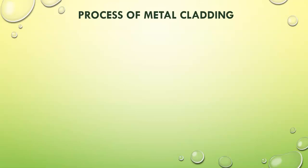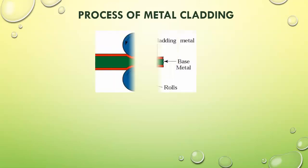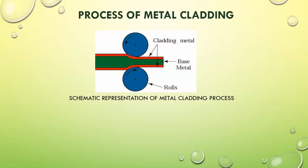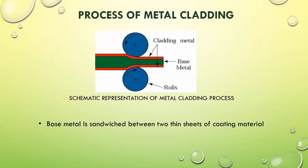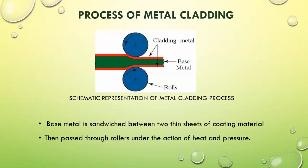Let us see the process of metal cladding. This is a schematic representation of the metal cladding process. Here, you have the base metal which is literally sandwiched between two thin sheets of coating material. It is then passed through hot rollers, and because of the action of heat and pressure, the sheets stick to each other. And thus, you have the base metal which is cladded by the coating metal.